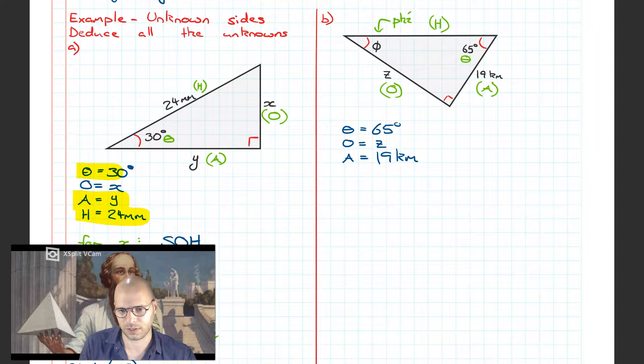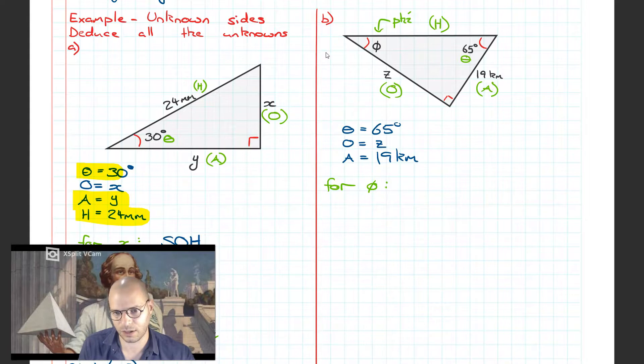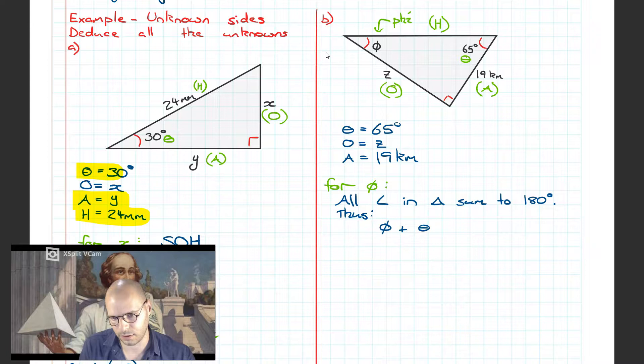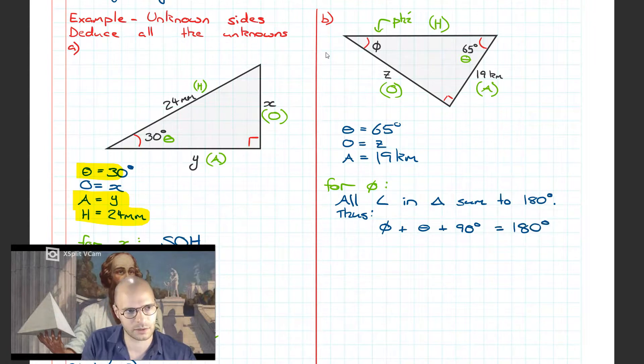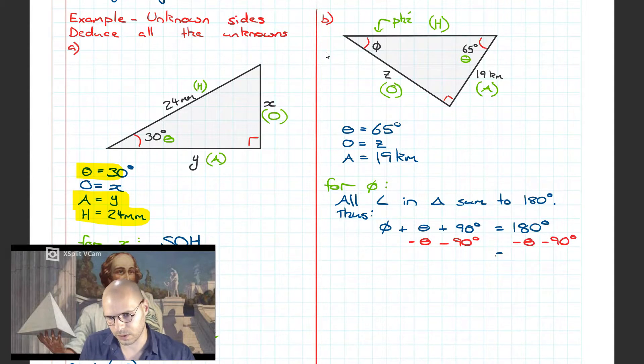What we have is theta, the opposite, and the adjacent. The first thing I'm going to try and find here is the simplest one, which is the value for phi. Phi itself isn't going to use any of the trigonometric ratios. Rather, we're going to use a property that we know to be true for all triangles, in that the sum of the angles within a triangle have to equal 180 degrees. Using this property, we can say that the addition or the sum of phi, theta, and the right angle which is of course 90 degrees, must all equal 180 degrees.